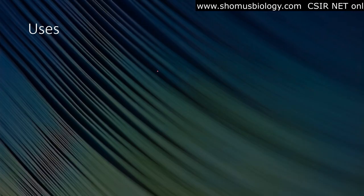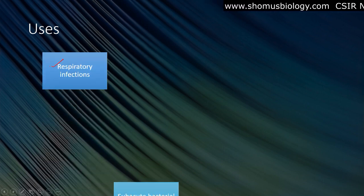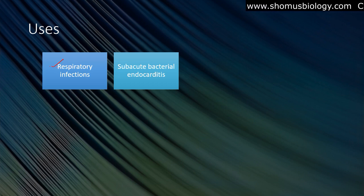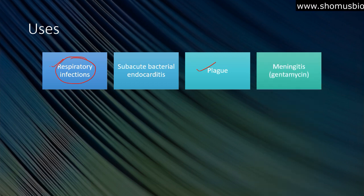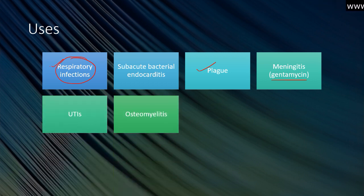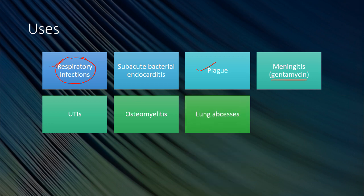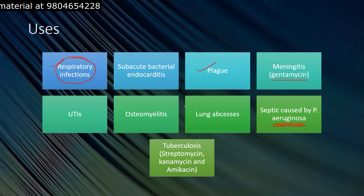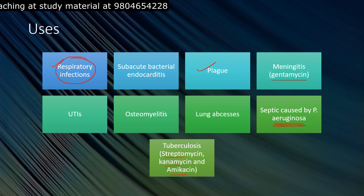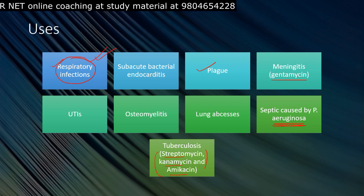Clinical uses of aminoglycosides include: respiratory infections, subacute bacterial endocarditis, plague, meningitis (particularly gentamicin), urinary tract infections, osteomyelitis, lung abscess, sepsis caused by Pseudomonas aeruginosa, and tuberculosis. Streptomycin, kanamycin, and amikacin variants are particularly effective against tuberculosis due to their activity against aerobic bacilli.